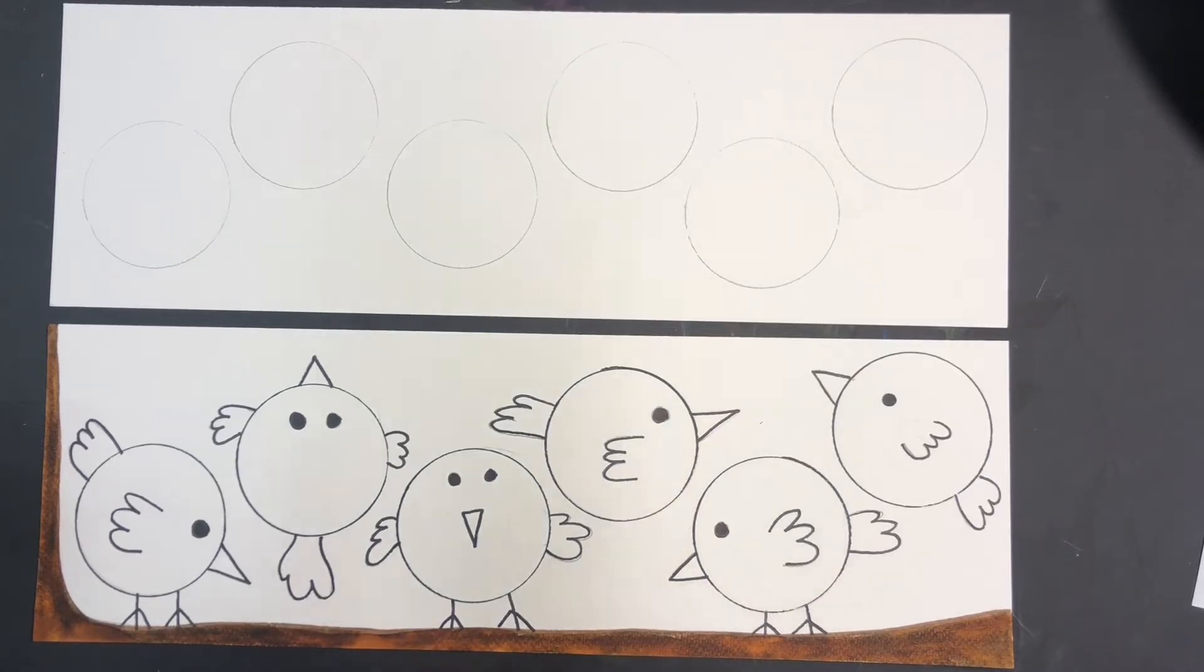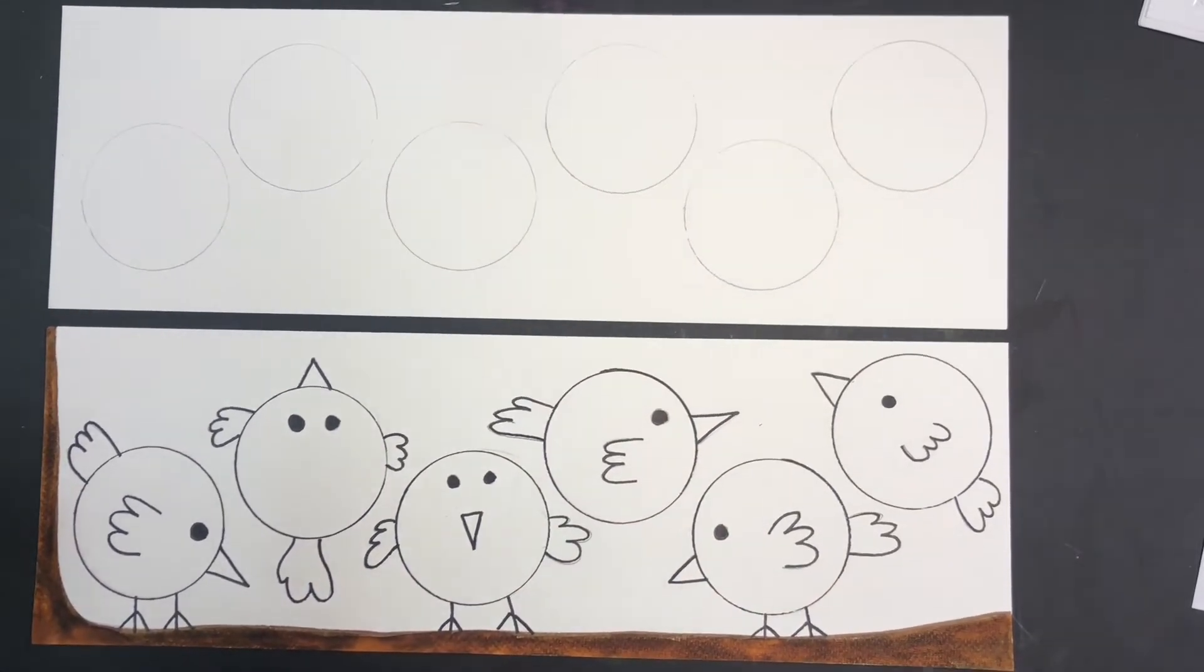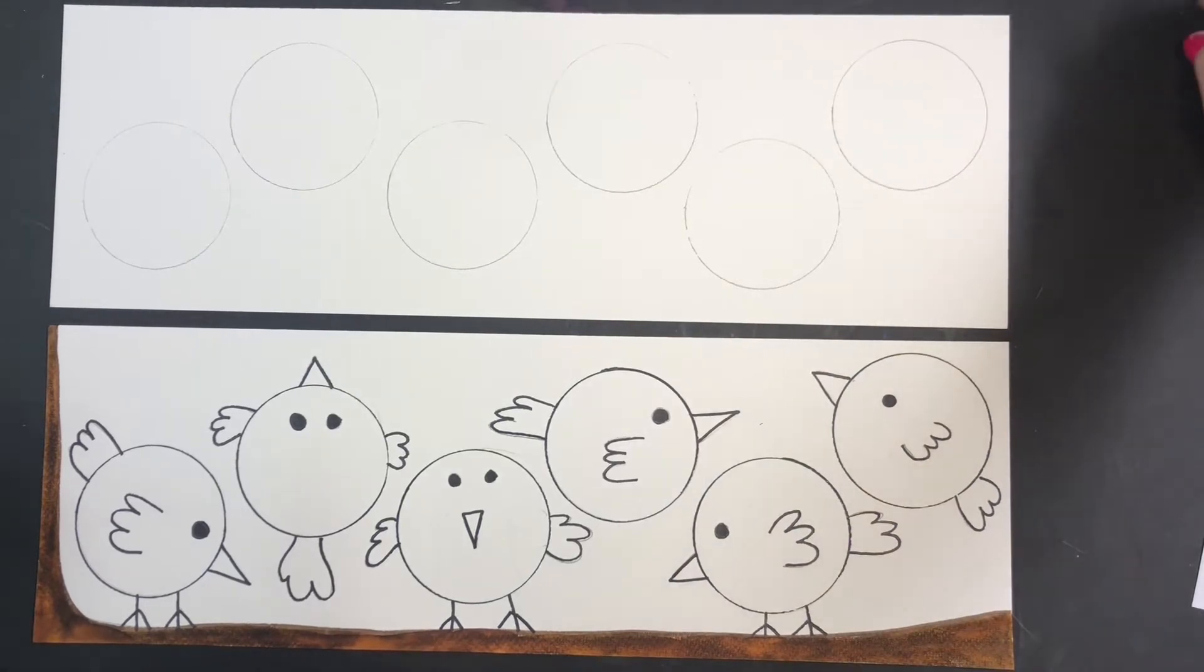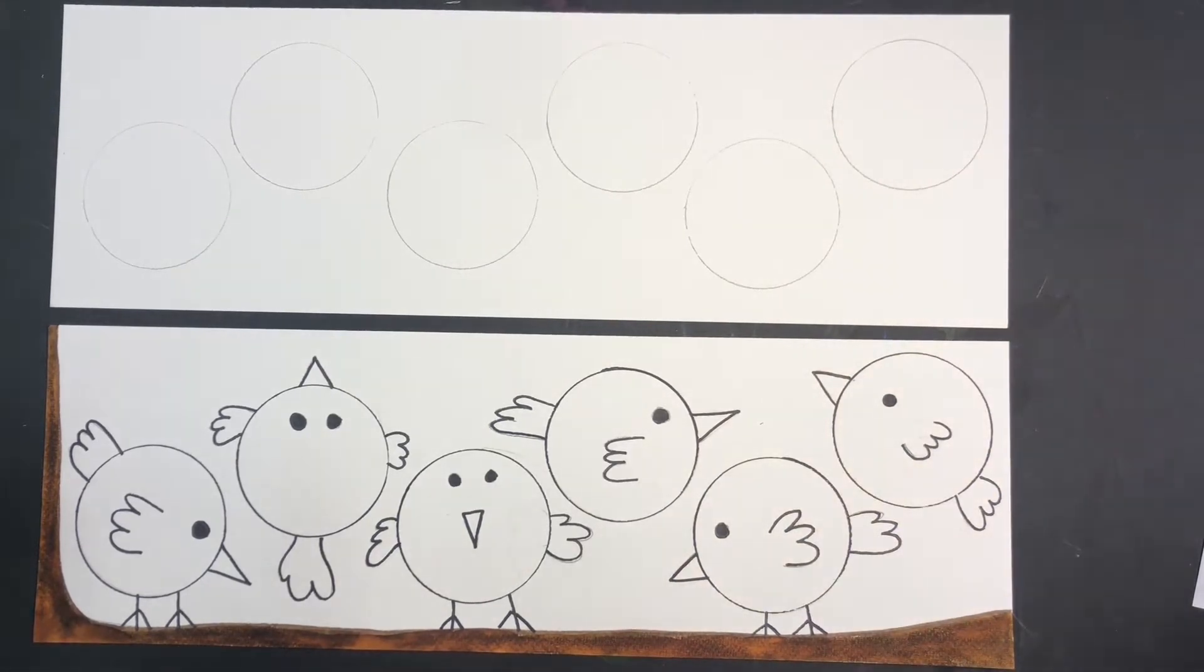Okay, boys and girls, so what we're going to do is we are going to create our birds on a tree branch using a circle stencil.